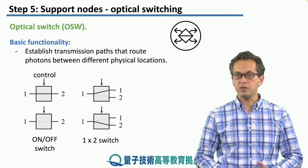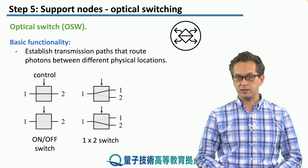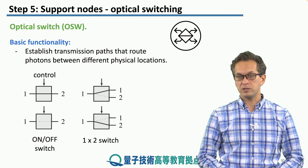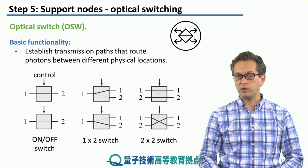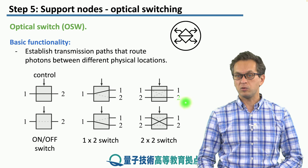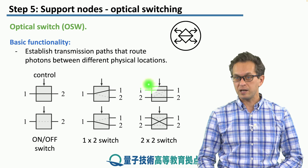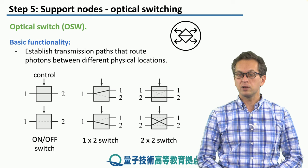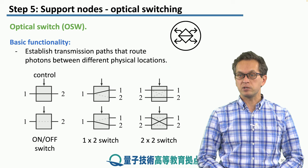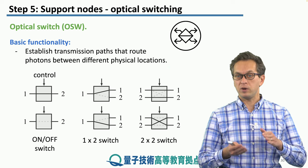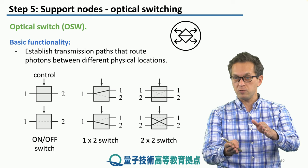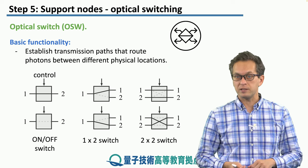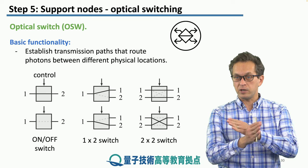We can keep increasing the complexity of this switch by going to two-by-two, where we have two input ports and two output ports. This time the control determines whether our photons just go straight through without swapping places, or if they cross.